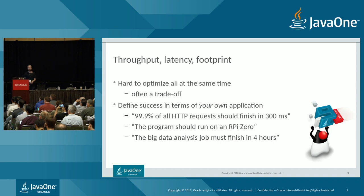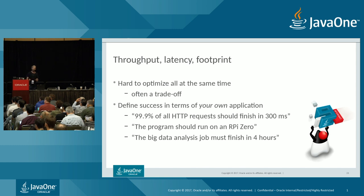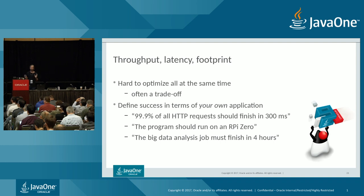It's very important to define success in terms of your own application. For example, if serving a web page, you might say 99.9% of users should get a response in 300 milliseconds, or the program should run on a Raspberry Pi Zero, or a big data job should finish in four hours. No one cares about a blazingly fast JVM if your program runs slow — what matters is that your program is fast, and how the user perceives the application's performance.